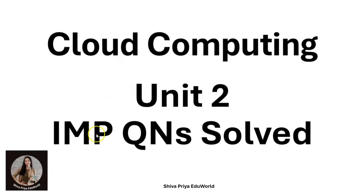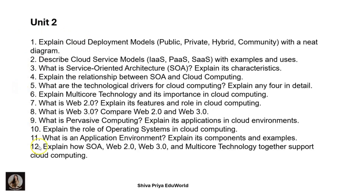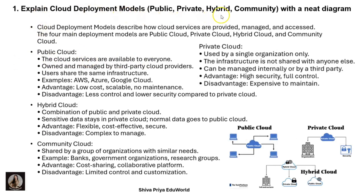Hello everyone, welcome back to the cloud computing series. In this video I will explain the important questions from unit two. Let us start with the first question: explain cloud deployment models — that is public, private, hybrid, and community — which I have explained already in unit one. Let us see once again. We have four cloud deployment models. Cloud deployment models describe how cloud services are provided, managed, and accessed.